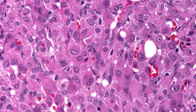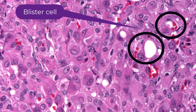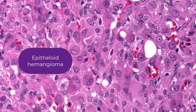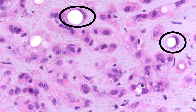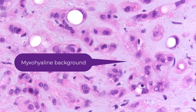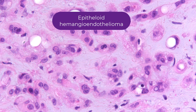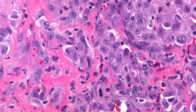Consider this tumor: epithelioid cells with abundant eosinophilic cytoplasm, perhaps some grooves — but look at that blister cell. This is an epithelioid hemangioma. Another tumor has cells with abundant eosinophilic cytoplasm and grooves, but there are blister cells (vacuoles specifically) and a myxohyaline background — this is an epithelioid hemangioendothelioma.